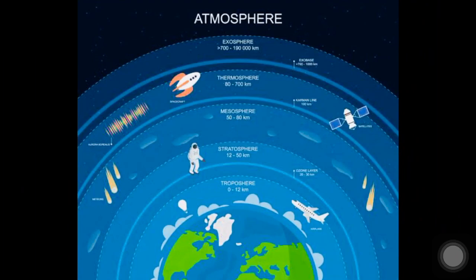Thermosphere lies next to the mesosphere. In this layer, temperature rises drastically. It is also called the ionosphere, as the gaseous atoms are ionized due to very high temperature. The ions found in this layer help in reflecting radio waves.